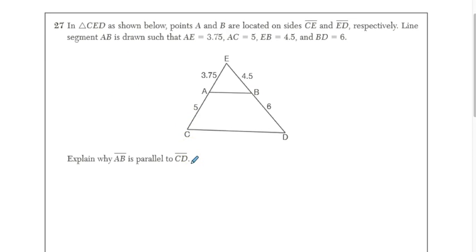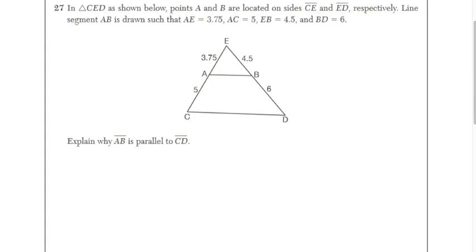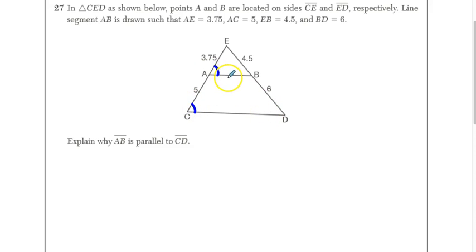In triangle CED, points A and B are located on sides CE and ED respectively, and line AB is drawn such that AE is 3.75, AC is 5, EB is 4.5, and BD is 6. Explain why AB is parallel to CD. This is a very interesting proof. I want to explain why AB and CD are parallel by proving that corresponding angles are congruent — because if corresponding angles are congruent, then AB and CD are parallel.